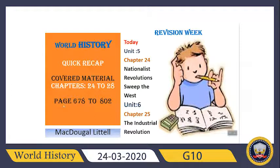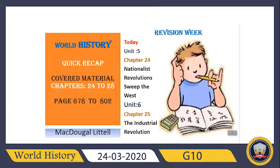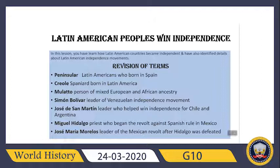More than half of the syllabus was done by the previous teacher, so I tried to collect everything accordingly. From chapter 24 to 28 it's done, and that is on pages 678 to 802. This week, in every class, I will pick up two or three chapters and different lessons so we can revise the main important things together. After I finish, you also need to see your books for more details. Today I'm taking chapter 24 to revise 'Nationalist Revolutions Sweep the West' and chapter 25 'The Industrial Revolution.'